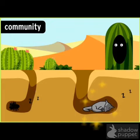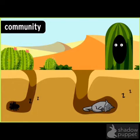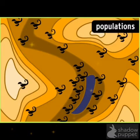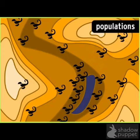For example, here we have a desert rat, an owl, scorpion, and cactus. The owl would love to get its talons on that desert rat to eat. A population covers all the individuals of a given species in an area at a certain time — here you see a population of scorpions.